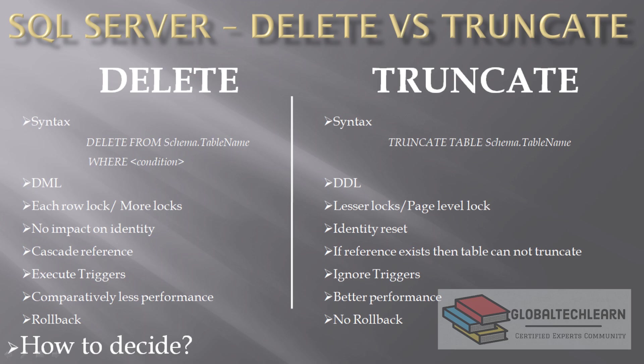Since DELETE works row by row, it creates a log for each record, which is why its performance is comparatively lower. TRUNCATE does not create logs for each record — it creates logs only at the page or table level, resulting in far fewer logs and much faster performance. For rollback: records deleted with DELETE can be rolled back since the DELETE statement maintains a log for each record. But since TRUNCATE does not maintain record-level logs, rollback of individual records is not supported.